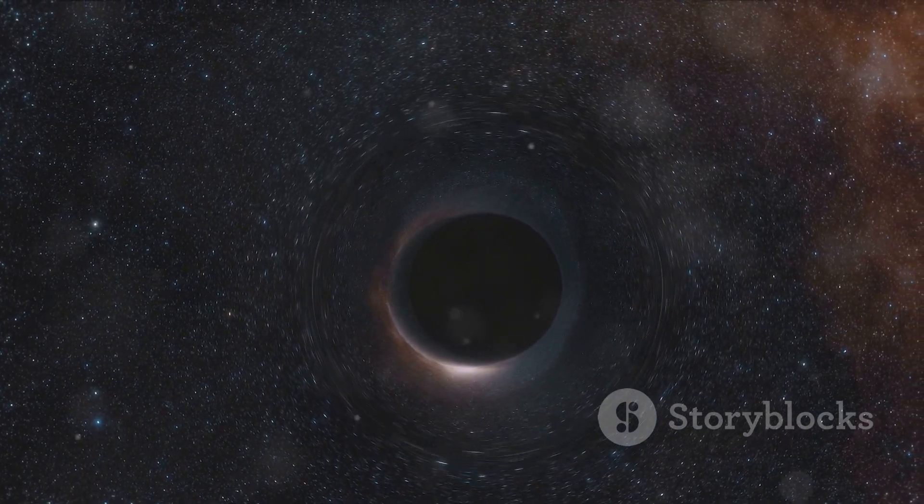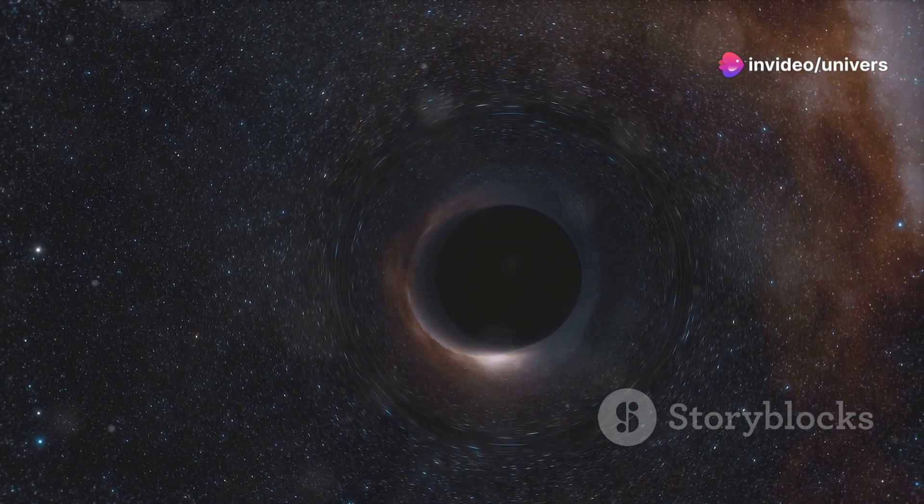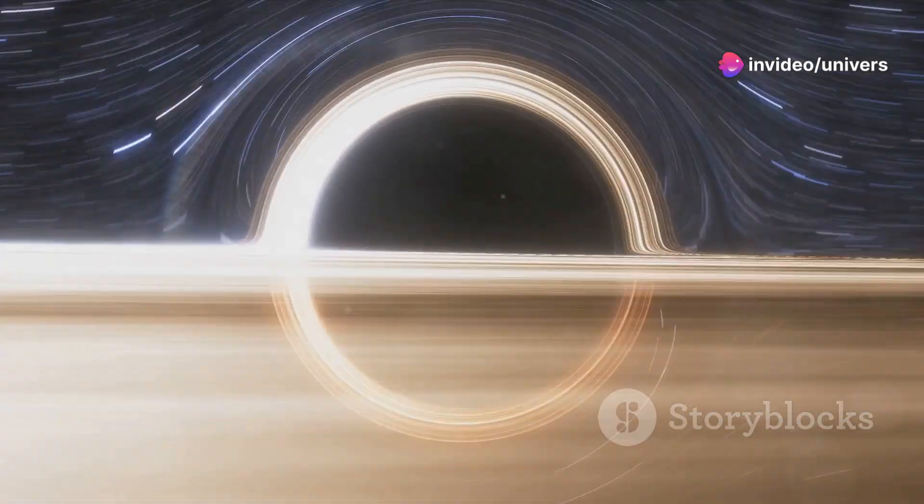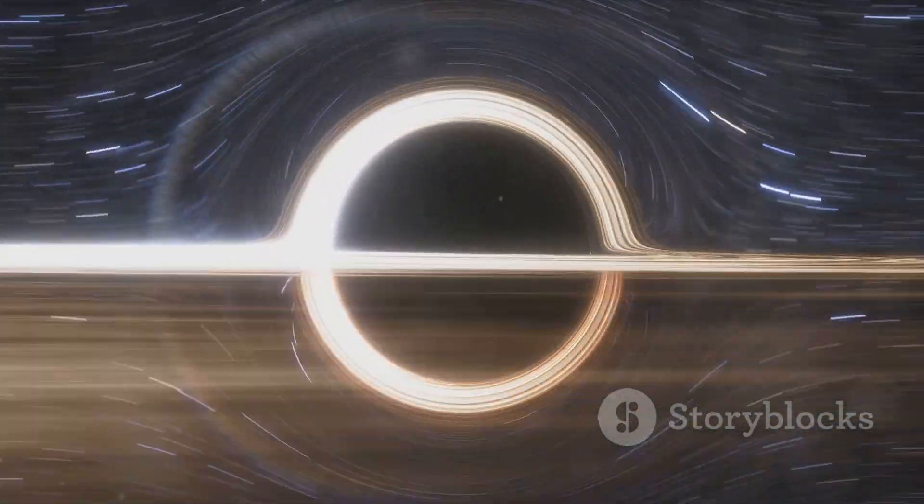Next, astronomers use the concept of gravitational lensing. Black holes, with their immense gravitational pull, bend the path of light passing nearby. This bending of light, akin to the distortion seen in a funhouse mirror, can reveal the presence of a black hole.